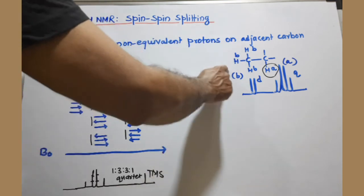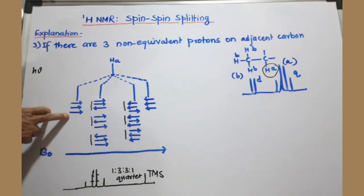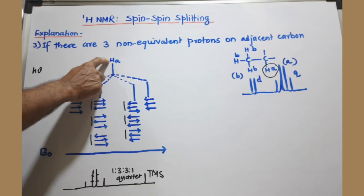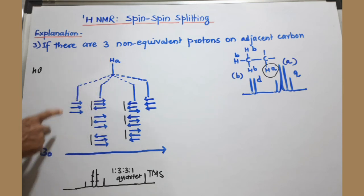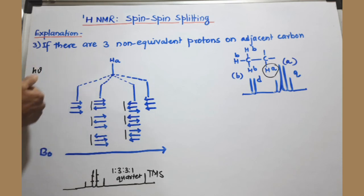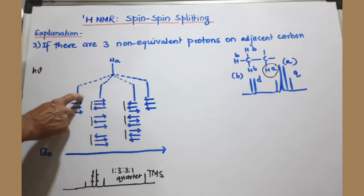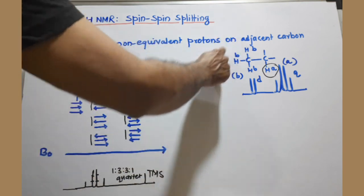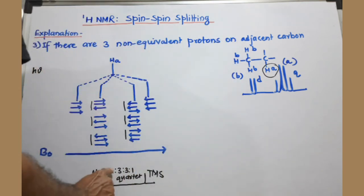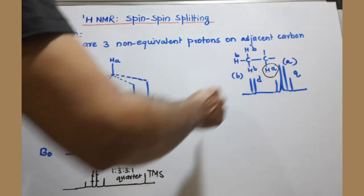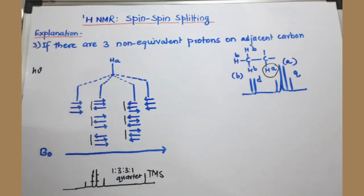One more possibility: all three tiny bar magnets are aligned with the applied magnetic field, reinforcing it. HA experiences more magnetic field — it is deshielded. To bring HA into resonance we need to decrease the external magnetic field, moving to the downfield region. This accounts for one peak on the downfield side. In this way, we get a quartet with height ratio 1:3:3:1 because of three adjacent non-equivalent protons — justified by the four orientations of three tiny bar magnets. Thank you.